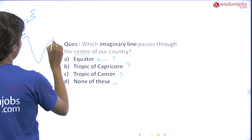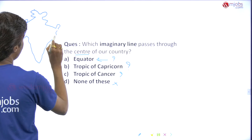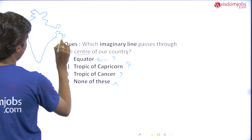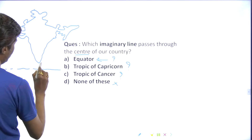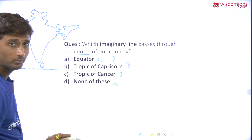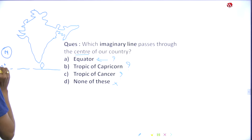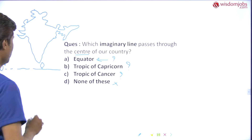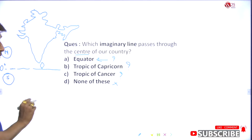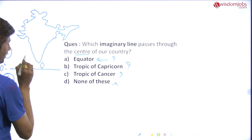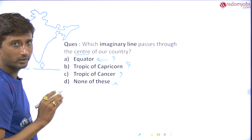You must know that India lies in the Northern Hemisphere. So it definitely means that the answer is not the equator, because the equator divides the globe into two parts: the Northern Hemisphere and the Southern Hemisphere.